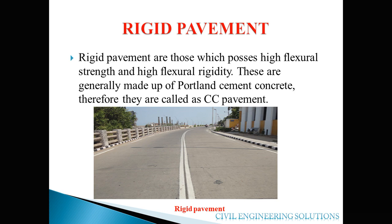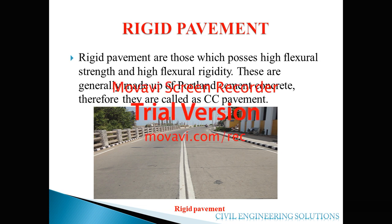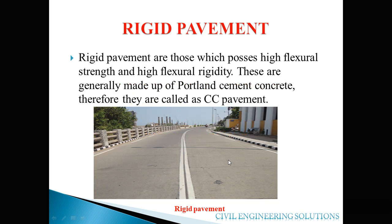A rigid pavement is one which possesses high flexural strength and high flexural rigidity. Rigid pavements are generally made up of Portland cement concrete, and therefore they are called CC pavements. The uppermost layer is made up of cement concrete material.